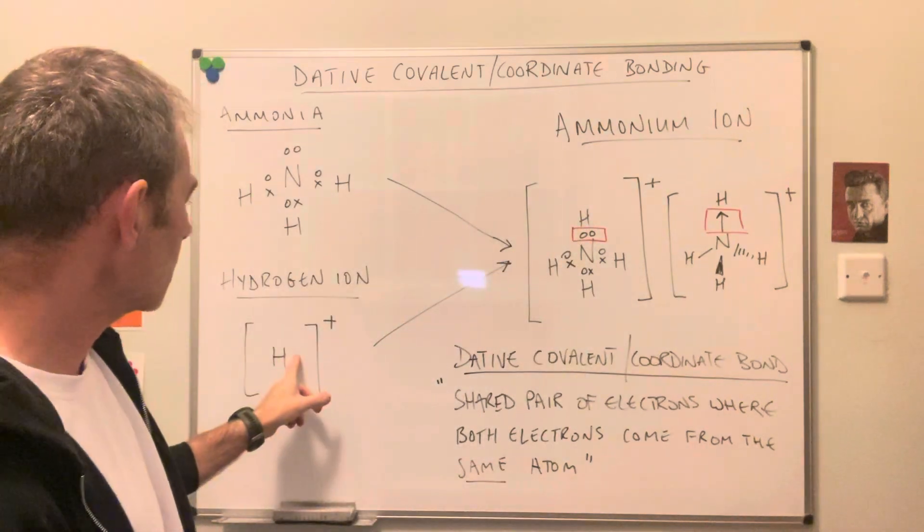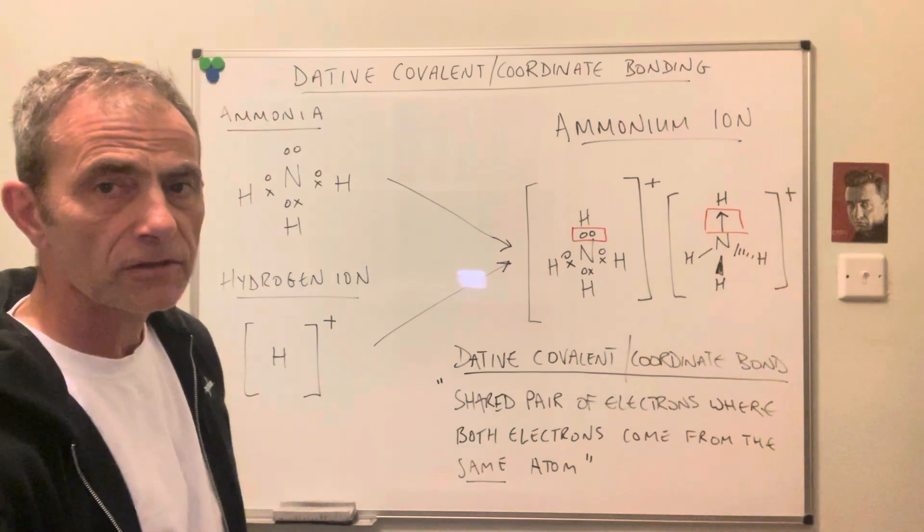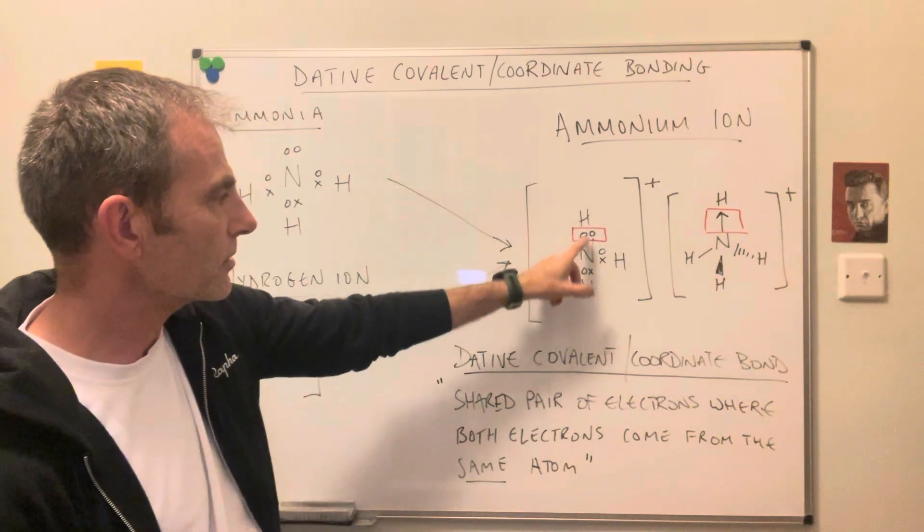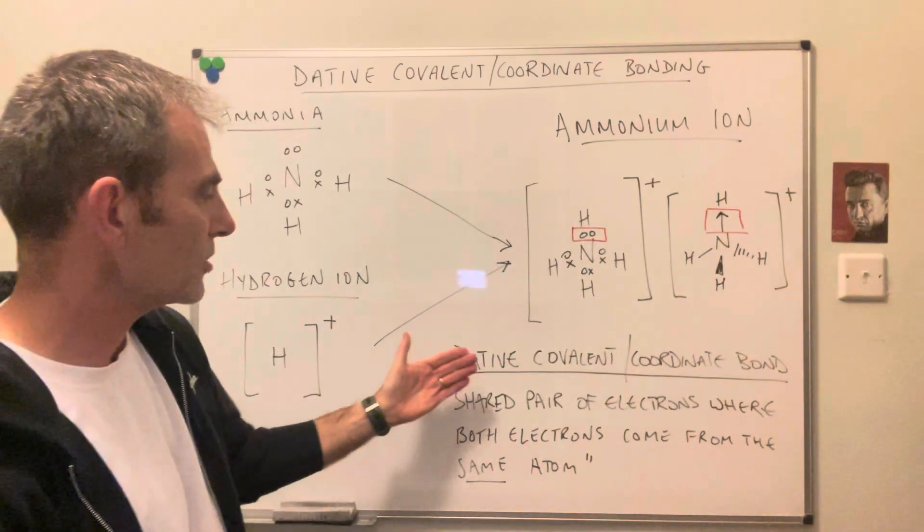You can see both of the electrons have come from the nitrogen. It's still a covalent bond, but both of the electrons in the shared pair have come from the nitrogen. So this is this new type of covalent bond.